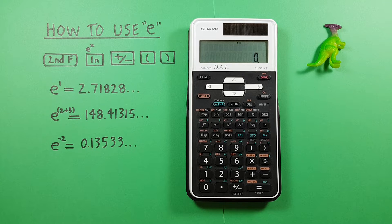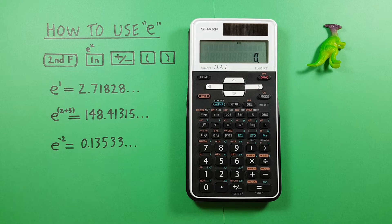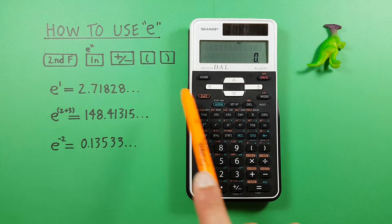The ln or natural log key with the second function of e to the power of x that looks like this, located here.